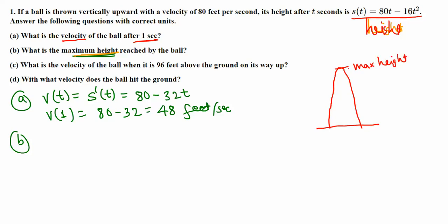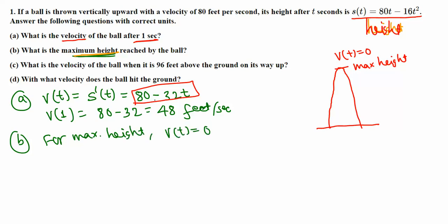At maximum height the velocity becomes zero, and we already found the velocity function. So for maximum height, we set the velocity equal to zero: 80 minus 32t equals zero. Solving for t, we subtract 80 from both sides and divide by 32, giving t equals 80 divided by 32, which is 2.5 seconds. So it takes 2.5 seconds to reach maximum height.